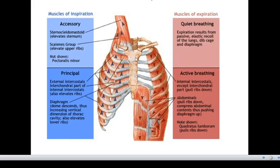This muscle, the sternocleidomastoid, is innervated by the accessory nerves. It works with the scalene muscles in the neck during forced inspiration. Its function is to raise the sternum, which is the bone at the front of the ribcage. This is a muscle of inspiration which is involved during forced inspiration, like when you're doing exercise.